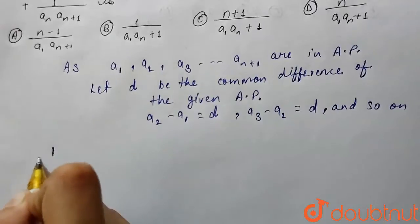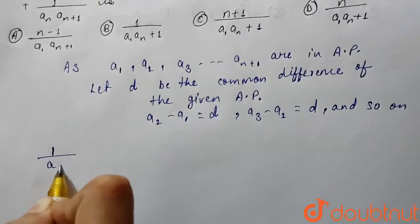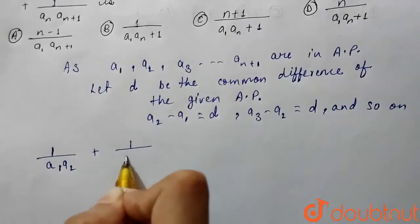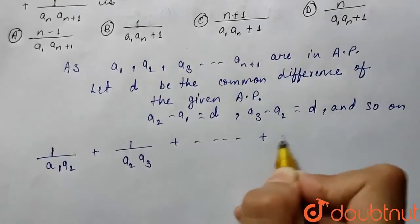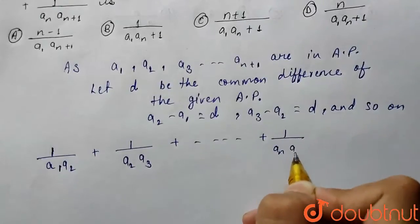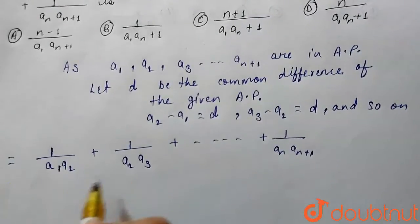So we are given the expression that is 1 upon a1a2 plus 1 upon a2a3 plus 1 upon anan plus 1. So we have to find this.